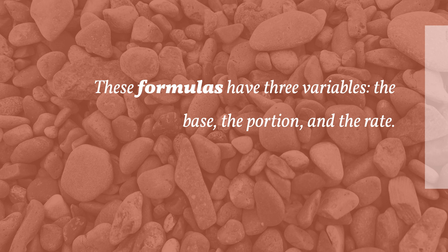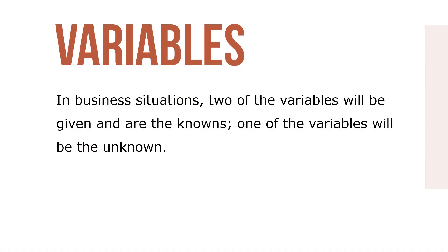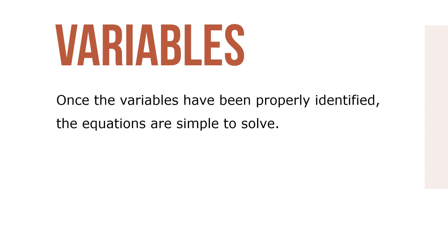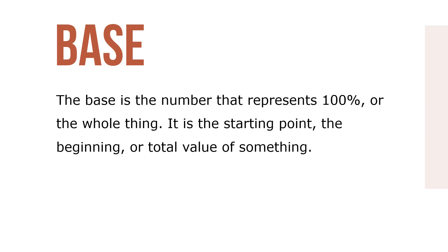These formulas have three variables: the base, the portion, and the rate. In business situations, two of the variables will be given and are the knowns; one of the variables will be the unknown. Once the variables have been properly identified, the equations are simple to solve. The base is the number that represents 100% or the whole thing. It's the starting point, the beginning, or the total value of something. The base is often preceded by the word 'of' in a written statement because it's multiplied by the rate.